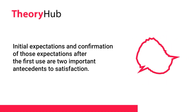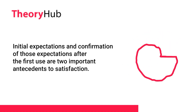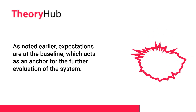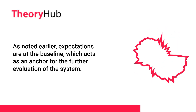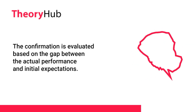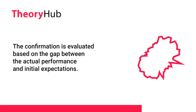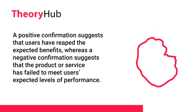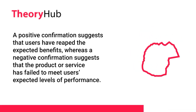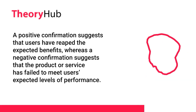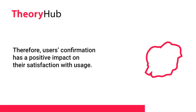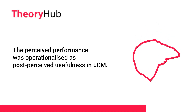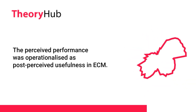Expectations act as an anchor for the further evaluation of the system. Confirmation is evaluated based on the gap between actual performance and initial expectations. A positive confirmation suggests that users have reaped the expected benefits, whereas a negative confirmation suggests that the product or service has failed to meet users' expected levels of performance. Therefore, users' confirmation has a positive impact on their satisfaction with usage. The perceived performance was operationalized as post-perceived usefulness in ECM.